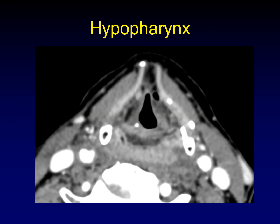We're going to talk about hypopharyngeal cancer as it relates to laryngeal cancers. To understand hypopharyngeal cancer, you need to understand the subsites of the hypopharynx. There is a portion right behind the larynx and cricoid cartilage called the post-cricoid region, and out on either side are the piriform sinuses. Normally the hypopharynx is collapsed down to just a couple of layers of mucosa and very hard to see — I'm showing a tumor case where the entire hypopharynx is uniformly involved to demonstrate the anatomy.